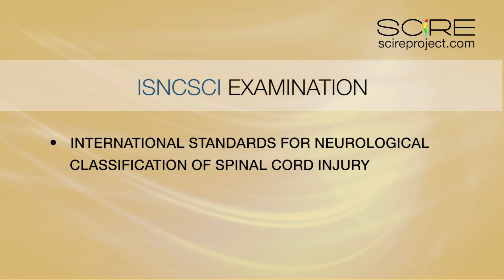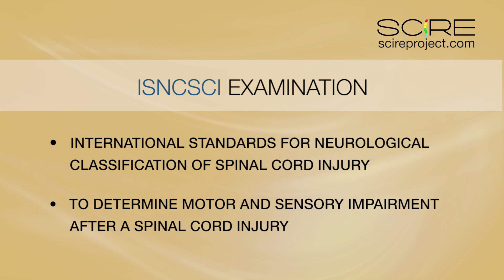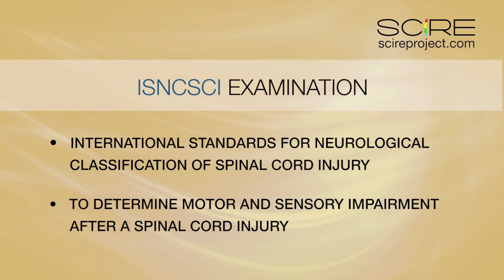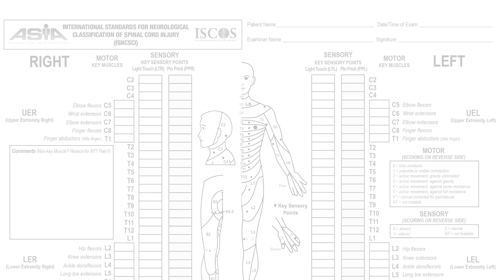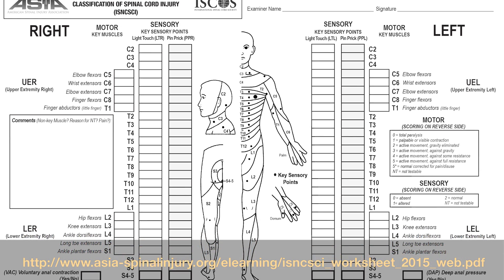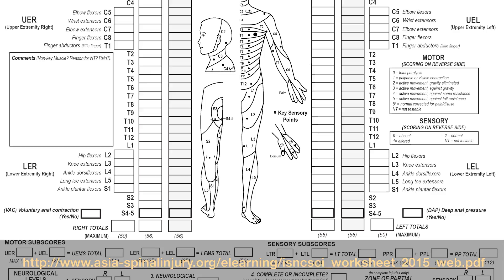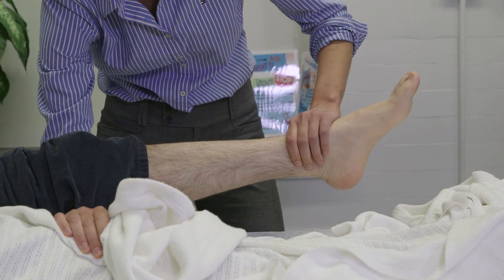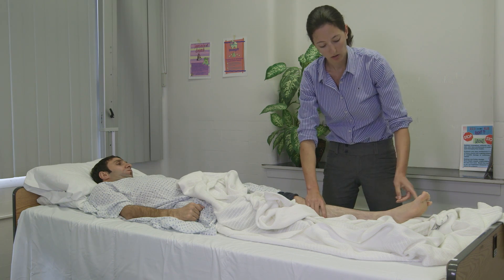The International Standards for Neurological Classification of Spinal Cord Injury, or ISNCSCI, is an examination used to determine motor and sensory impairment after a spinal cord injury. It was developed by the American Spinal Injury Association, or ASIA. This scale provides a common language for clinicians and patients to talk about spinal cord injuries, and is also a powerful research tool for evaluating the effectiveness of treatment techniques and protocols.